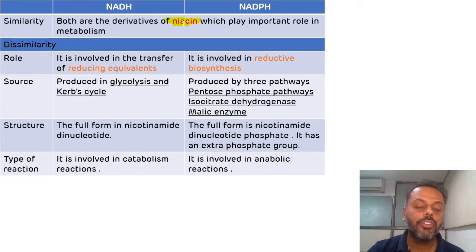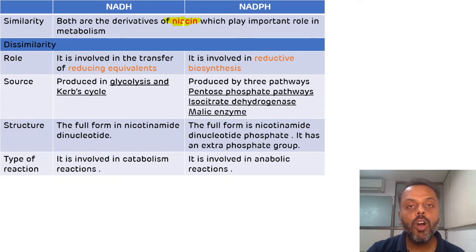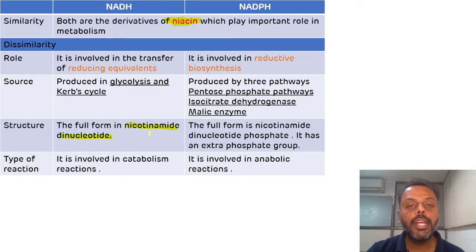Now we will see the differences. The first difference is related to the structure. The full form of NADH is nicotinamide adenine dinucleotide, while the full form of NADPH is nicotinamide adenine dinucleotide phosphate, meaning it has an extra phosphate group.